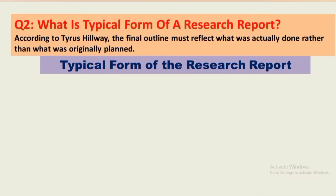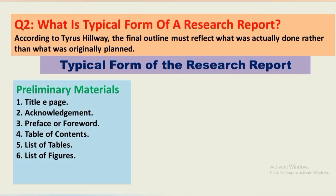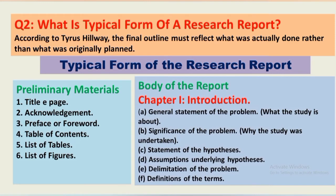What is the typical form of a research report? The preliminary materials include: title page, acknowledgements, table of contents, list of tables, list of figures, and the body of the report. Chapter One is the introduction, which covers: general statement of the problem, what the study is about, significance of the problem, statement of hypothesis, assumptions underlying the hypothesis, delimitations of the problem, and definition of terms.